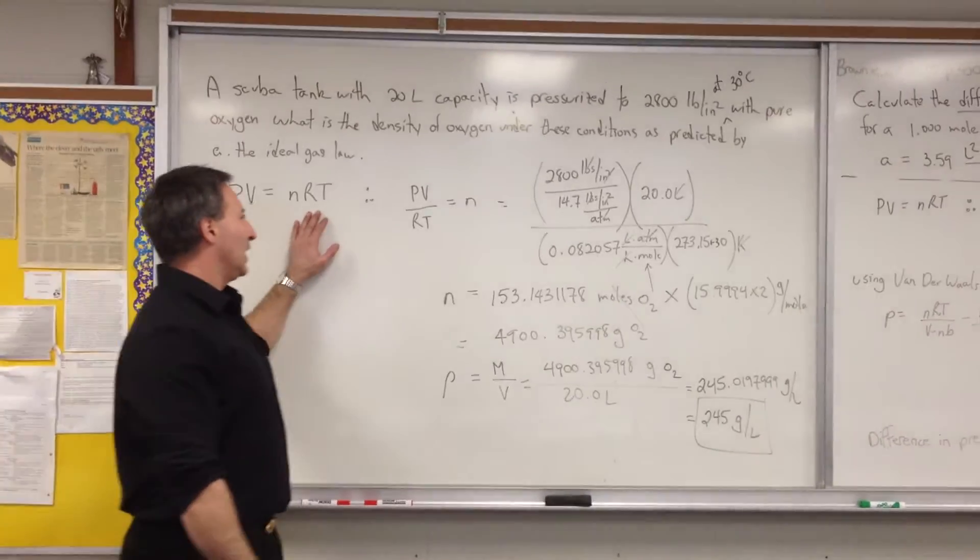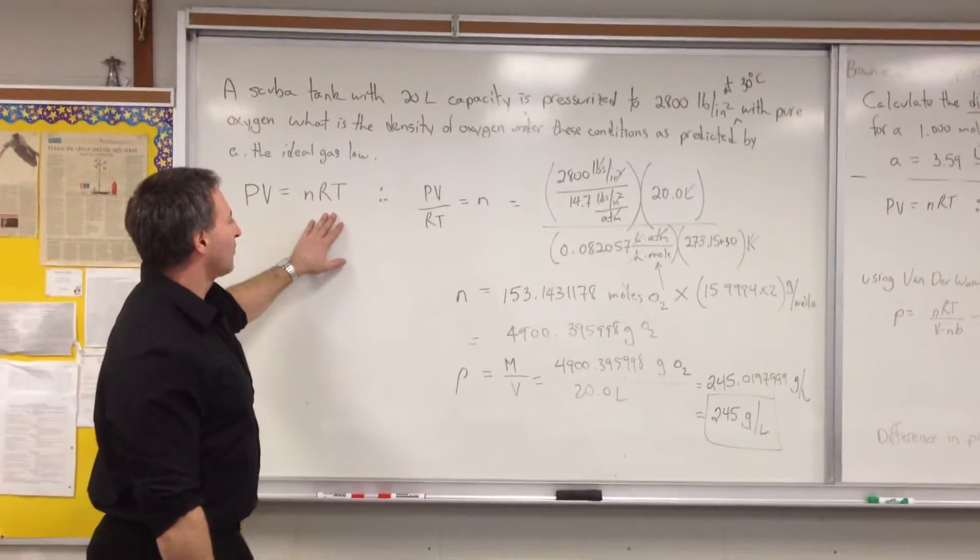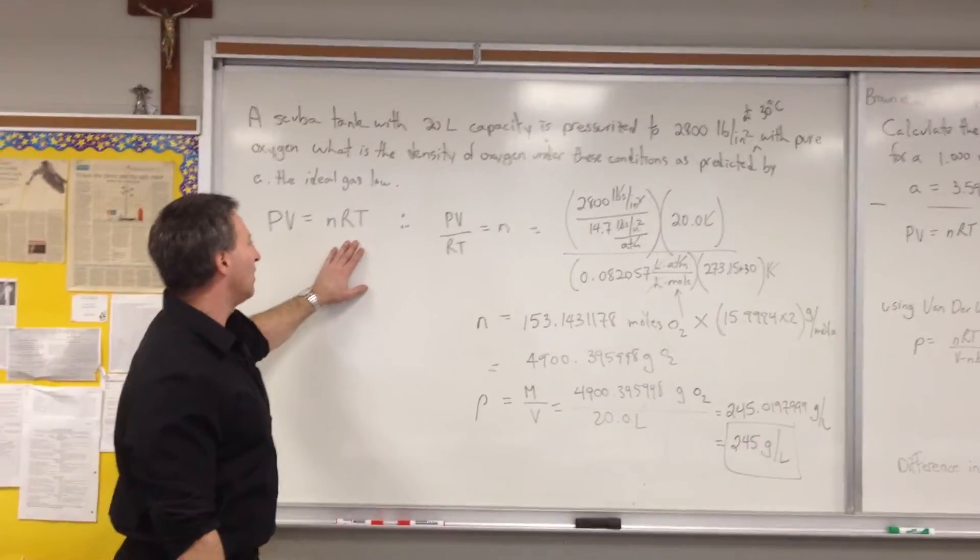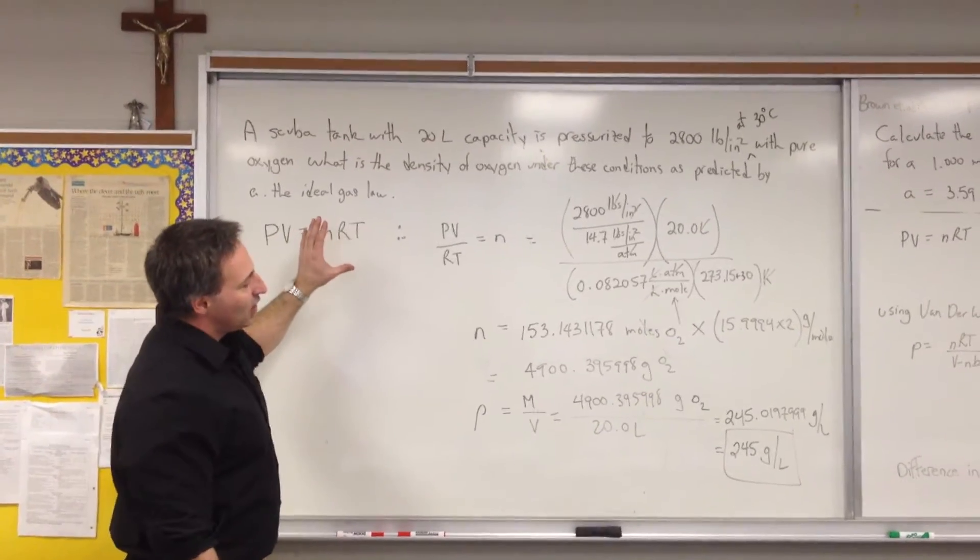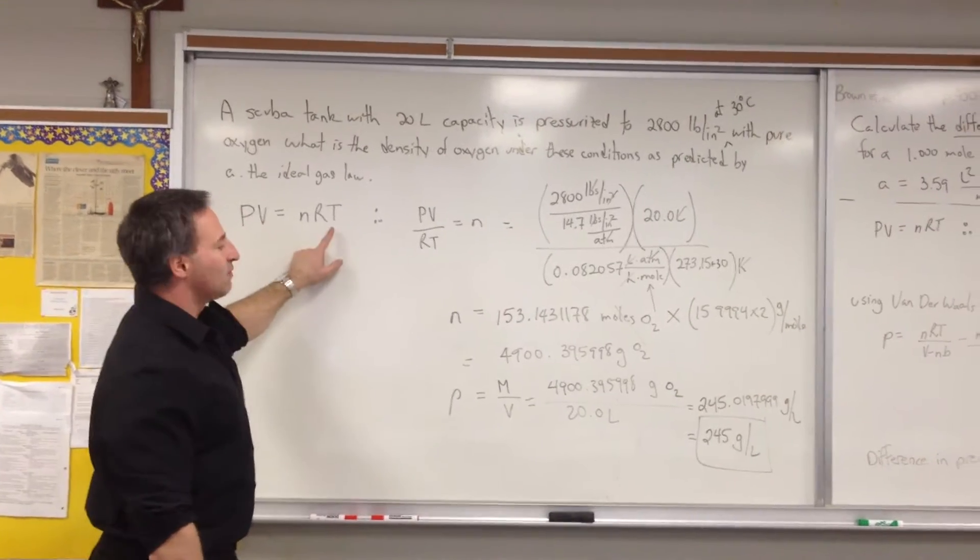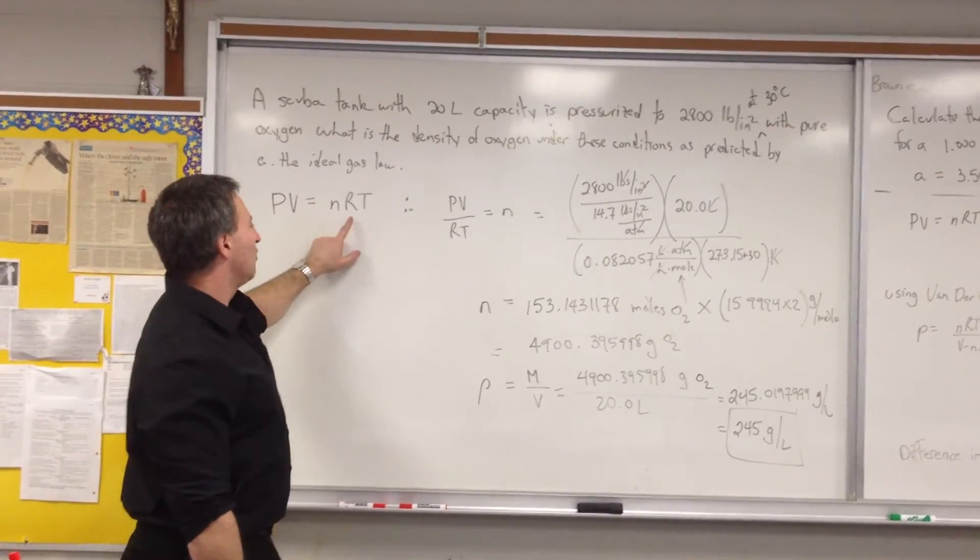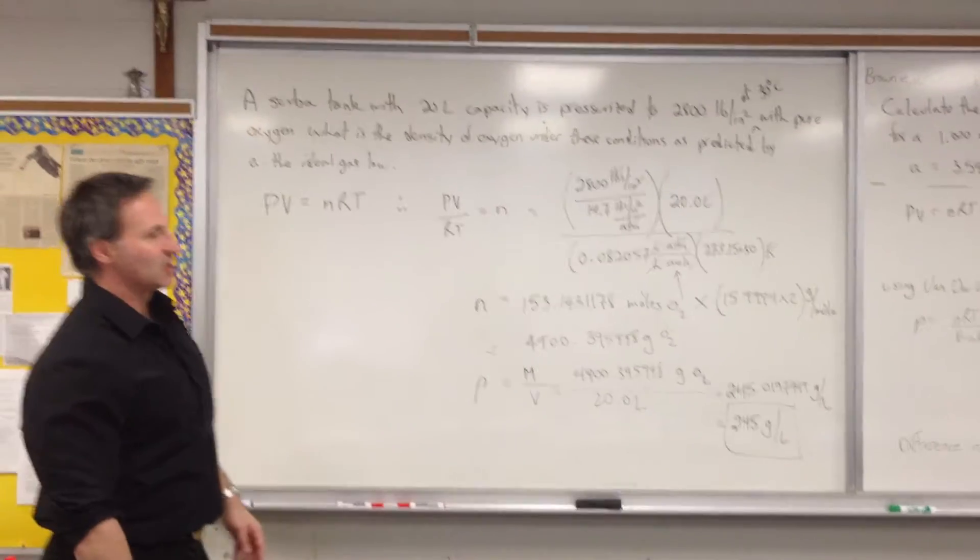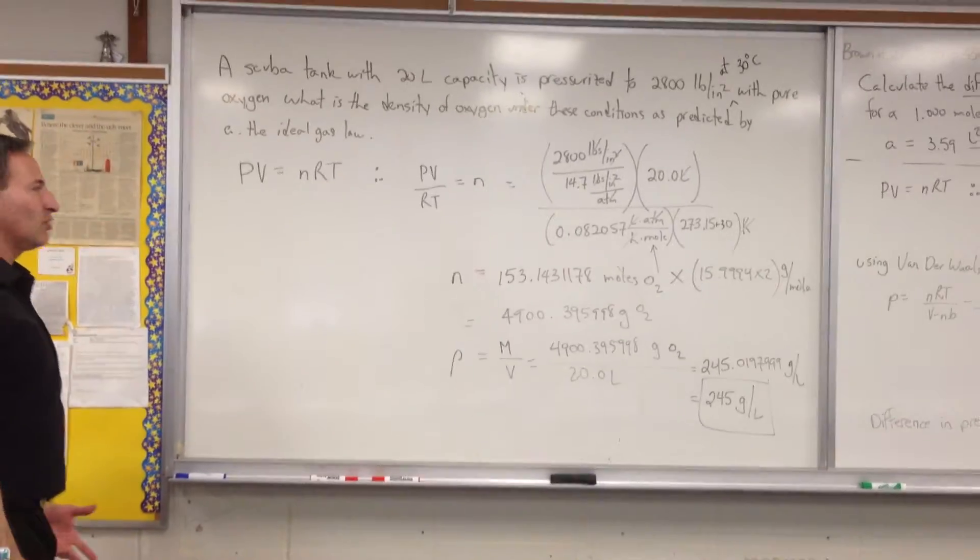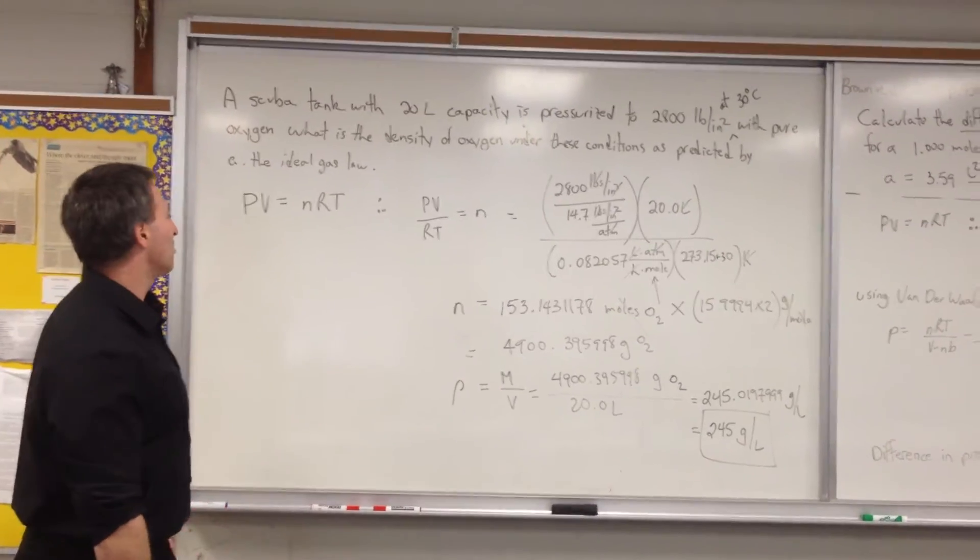So we have PV equals NRT is the ideal gas law. The best way to know how to solve these kinds of problems is to look for what's given. If they give you a problem like this, they're usually going to have to give you four of the variables, and then the fifth one has to be found by you. If they don't give you four of the variables, then you can't solve the problem.